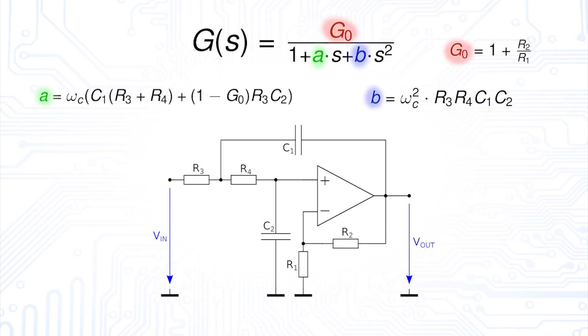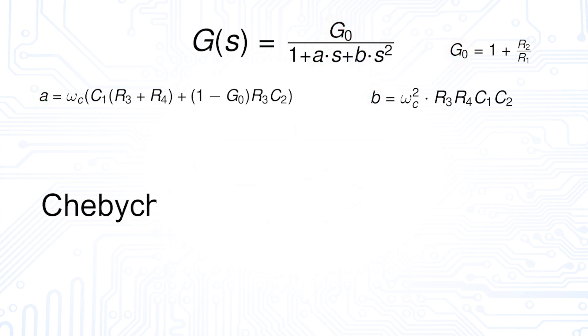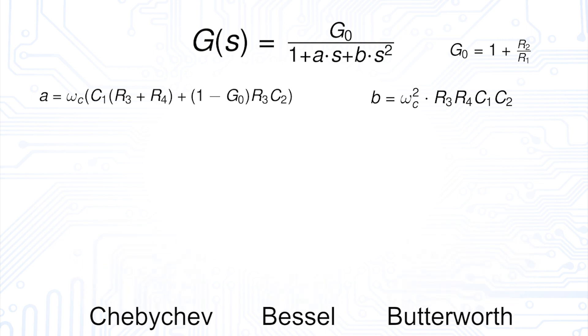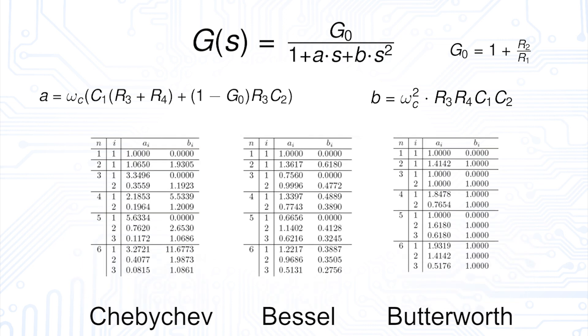The values of these coefficients define the characteristic of the filter, such as Chebyshev, Bessel, or Butterworth. Their corresponding value can be found in various filter coefficient tables.